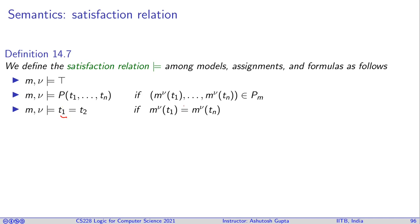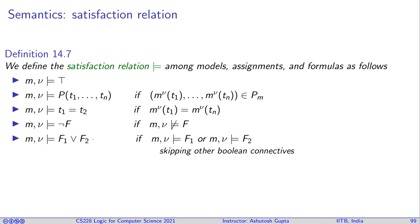For negation ¬F: the model and assignment satisfy ¬F if they do not satisfy F. For conjunction and disjunction, the propositional connectives are interpreted the same way as in propositional logic — nothing new there.